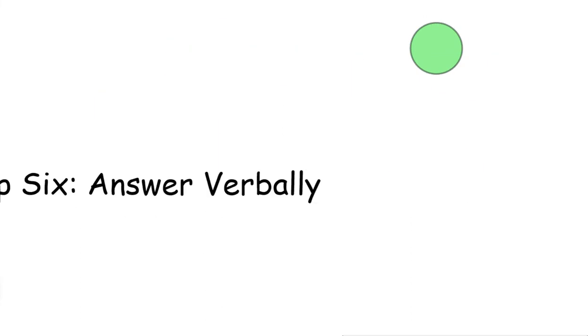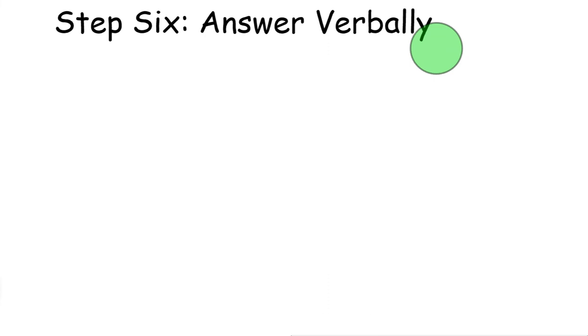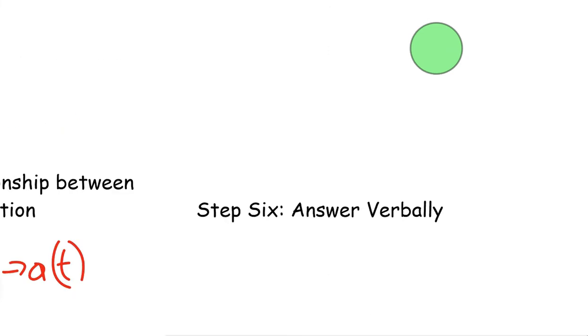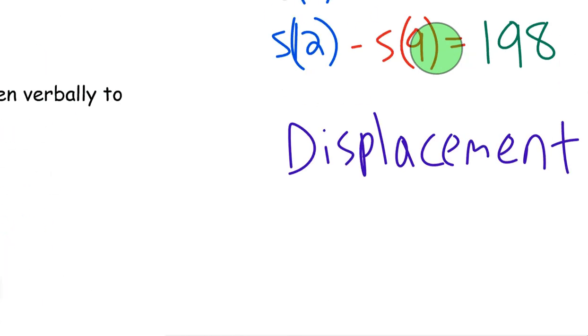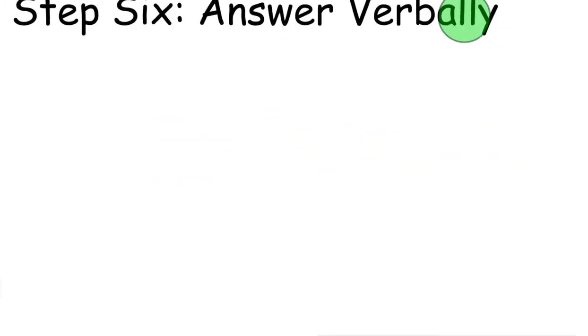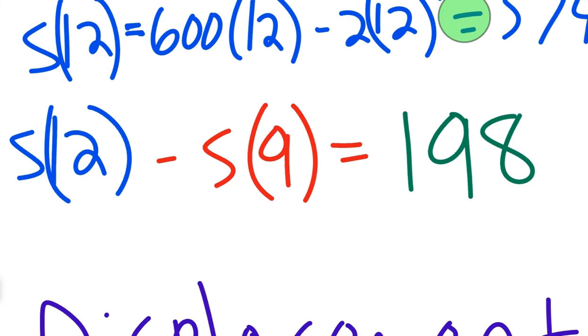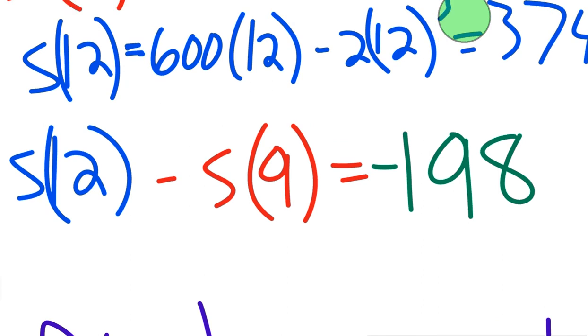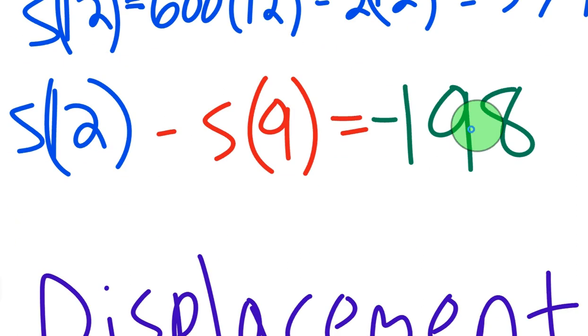The final step is to answer verbally. We're going to take this 198 figure and write a sentence about what we are answering. Before we do that, you might have noticed I did forget one little thing, which is negative, because S(12) is smaller than S(9). That means the helicopter actually dropped.